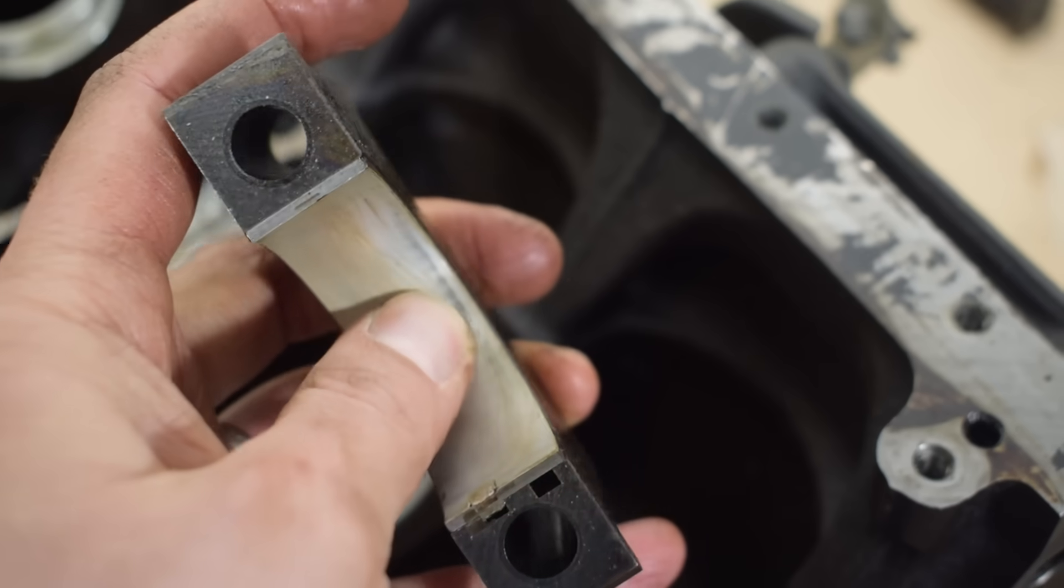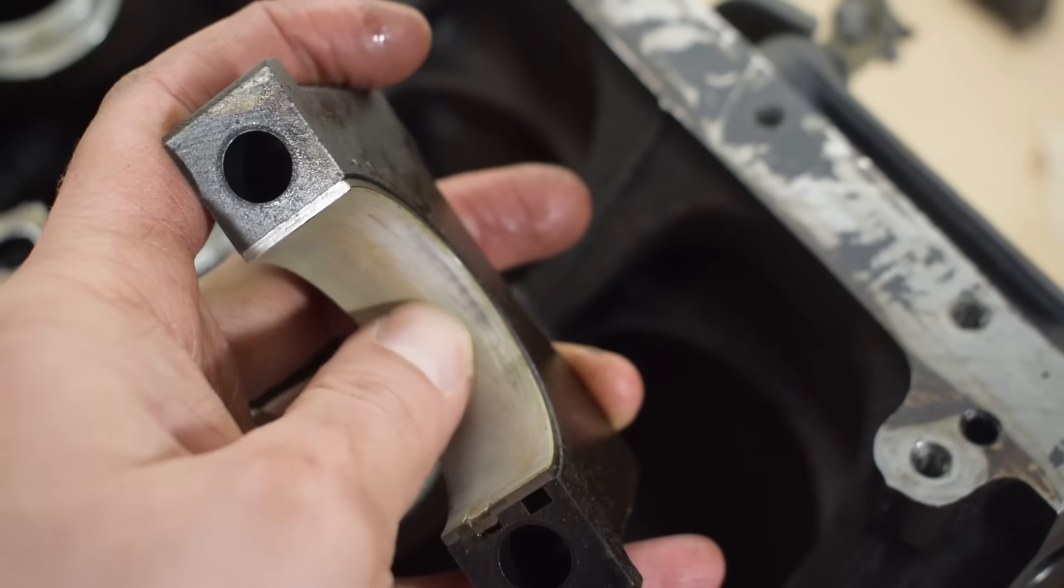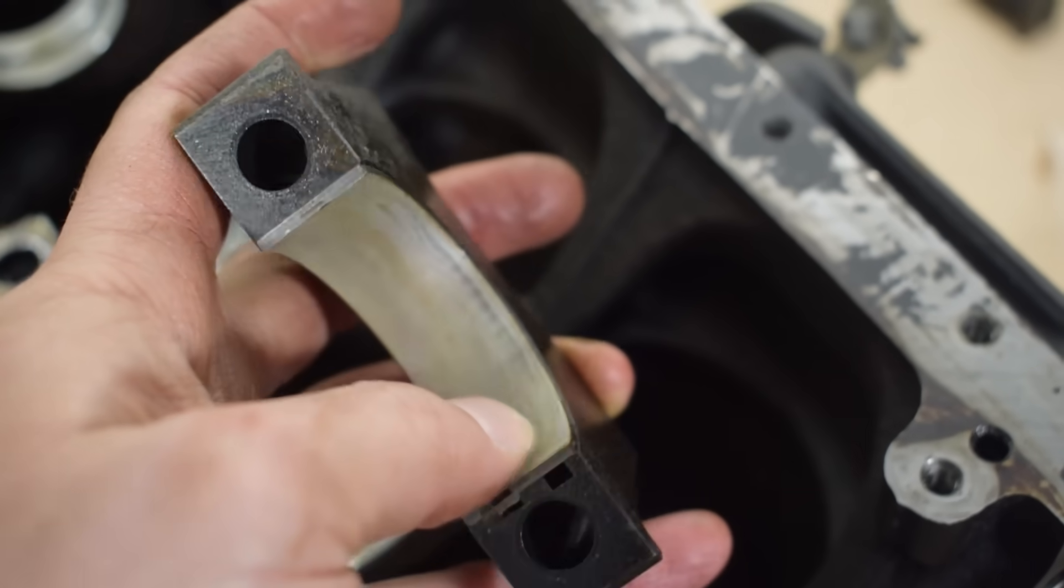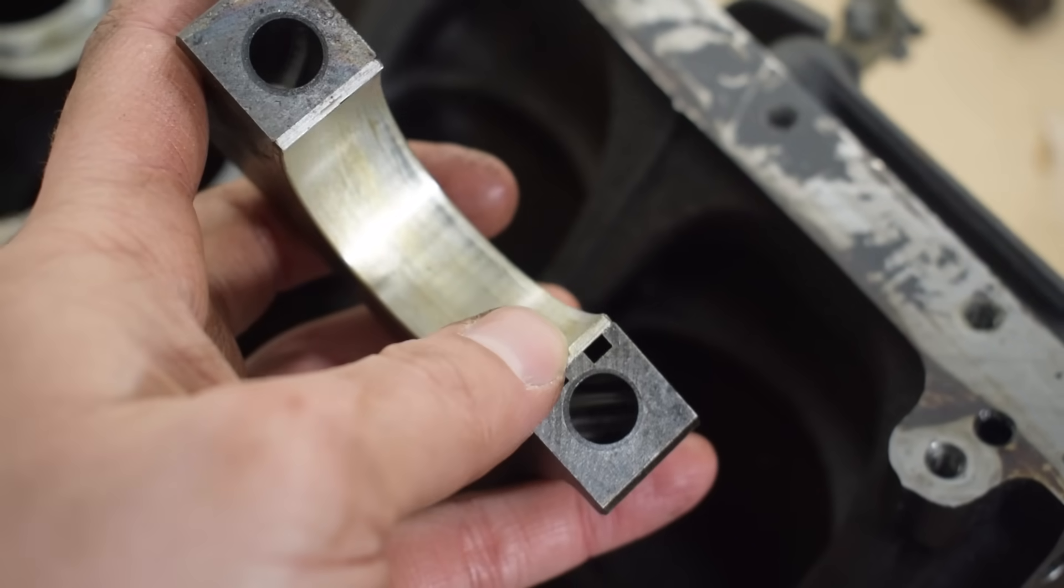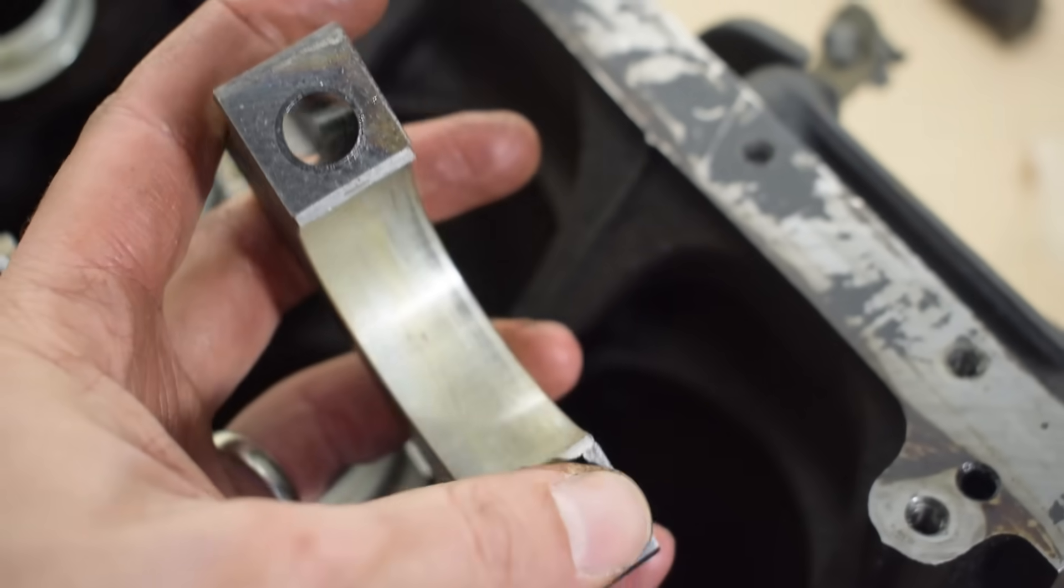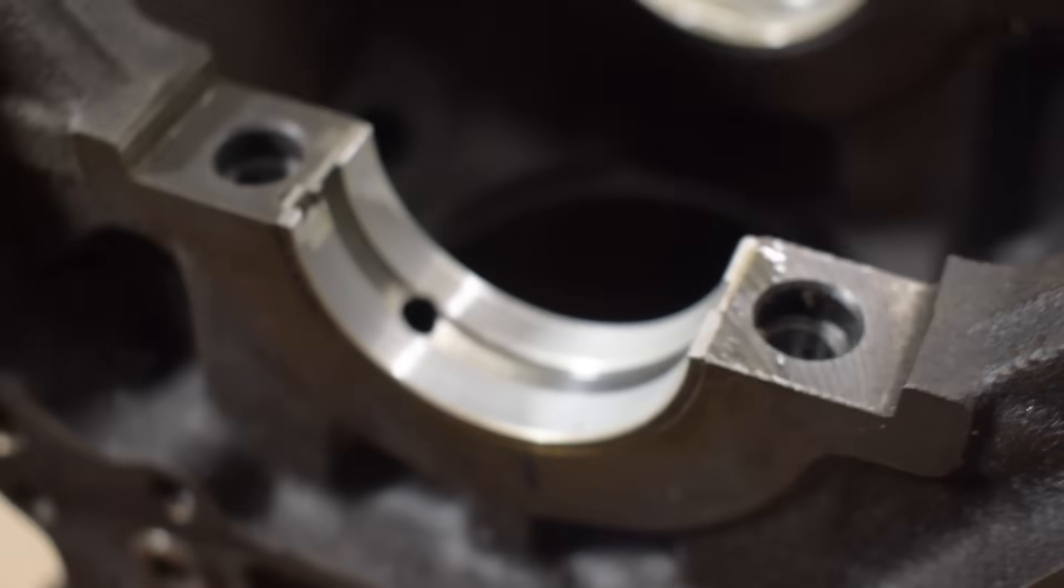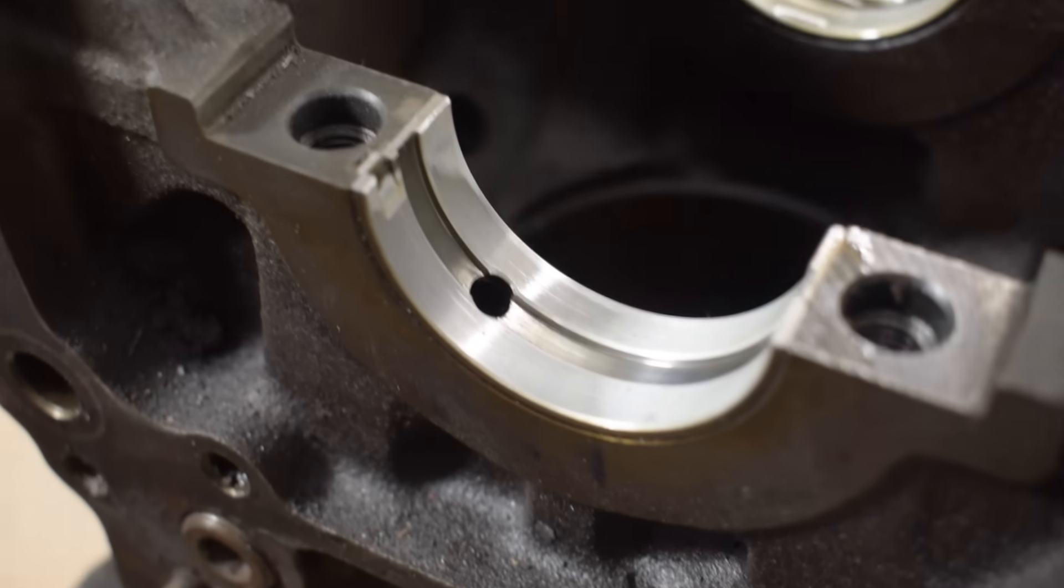Now, these bearings do display some signs of uneven wear, but this is very mild and it doesn't raise any red flags. In fact, this engine likely had a bearing reset at some point, as it was a very high mileage engine with a lot of blow-by. On the other hand, these bearings look practically new and there's almost no wear on them, which suggests that they have been replaced at some point, likely with the engine still in the car.